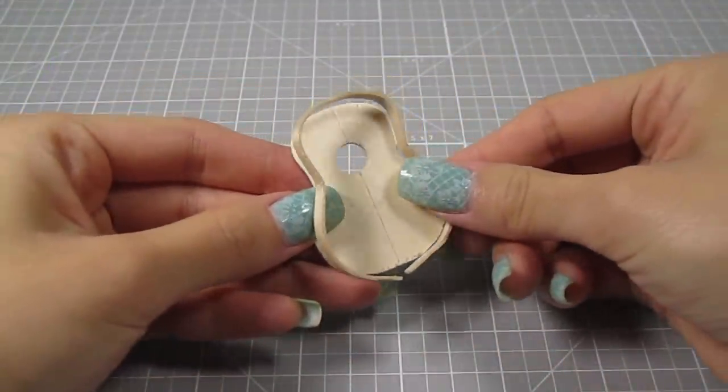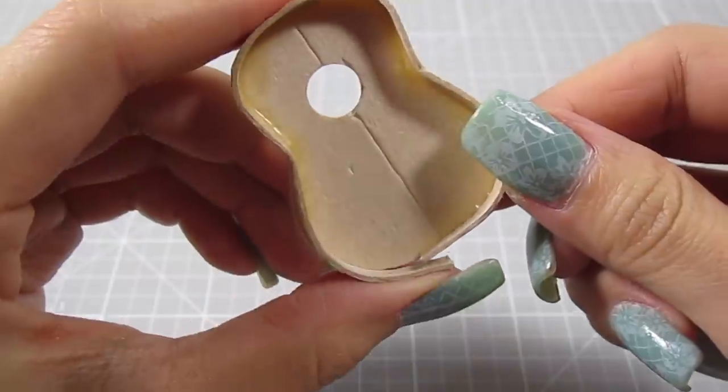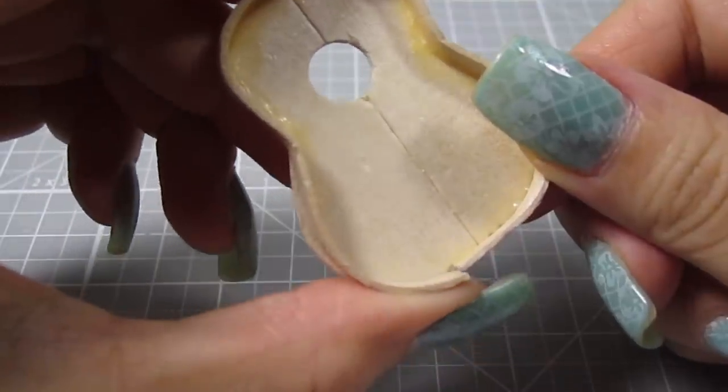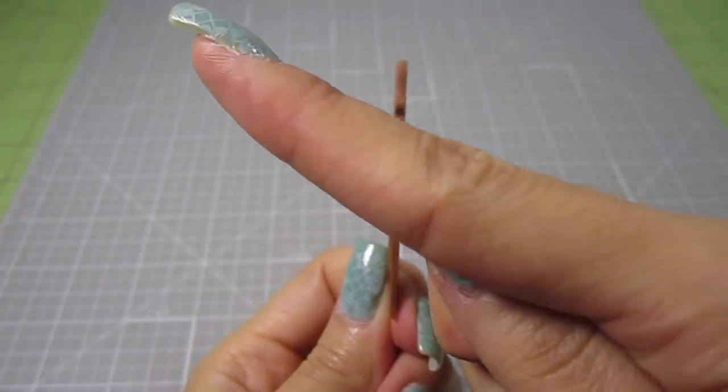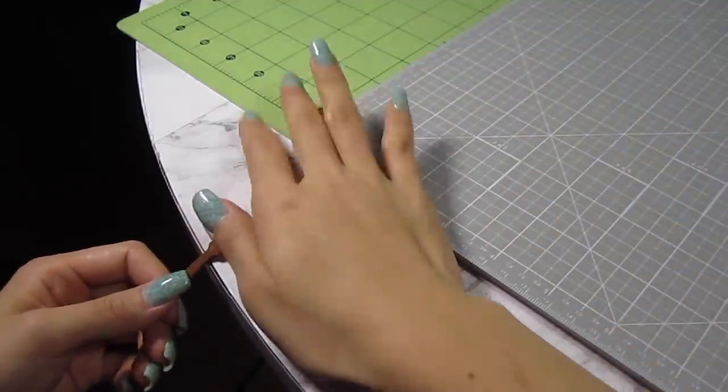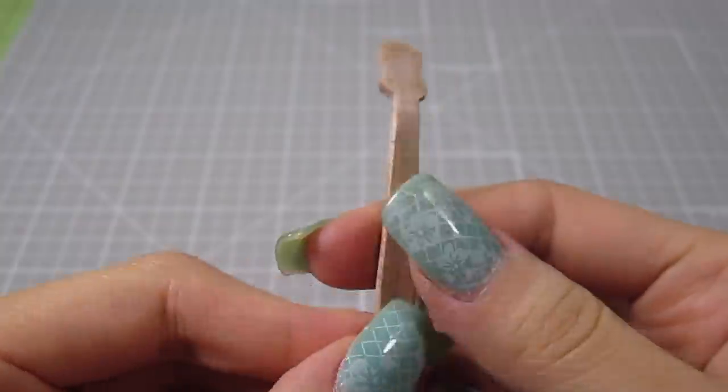Glue it to the front body piece. Cut off any excess. Alright, let's grab that headstock out of the boiling water. We need to bend the head back just a little bit. I place it on the edge of my desk and gently push it back. This is what it looks like when it dries.